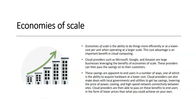Economies of scale is the ability to do things more efficiently or at a lower cost per unit when operating at a larger scale. Cloud providers such as Microsoft, Google, and Amazon are large businesses that leverage economies of scale and pass those savings on to their customers. These savings manifest in ways such as the ability to acquire hardware at a lower cost. Cloud providers can also make deals with local governments and utilities to get tax savings, lowering the price of power, cooling, and high-speed network connectivity, then pass those benefits to end users in the form of lower prices.